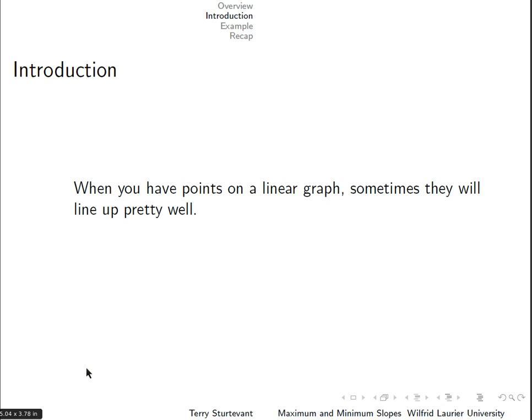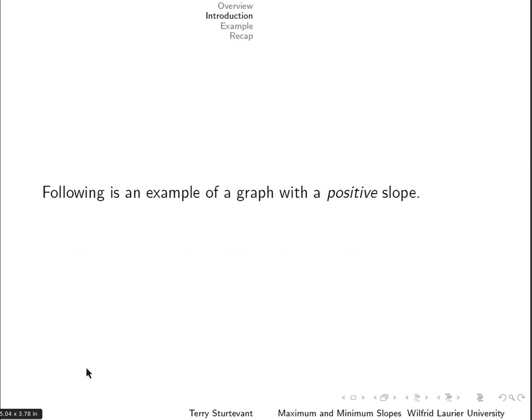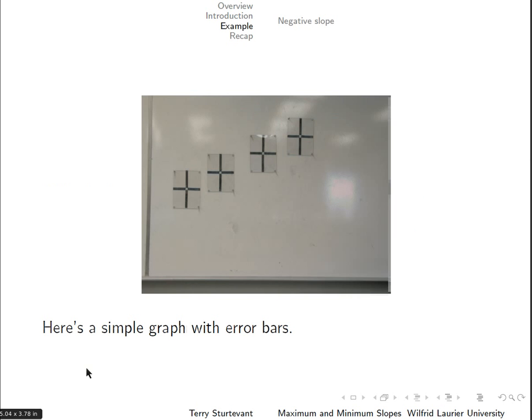When you have points on a linear graph, sometimes they'll line up pretty well. In this case, the uncertainties in the slope and the y-intercept will be determined by the error bars on the graph. Following is an example of a graph with a positive slope. Here's a simple graph with error bars, where the error bars for each point are shown by uncertainties in the x and y direction.